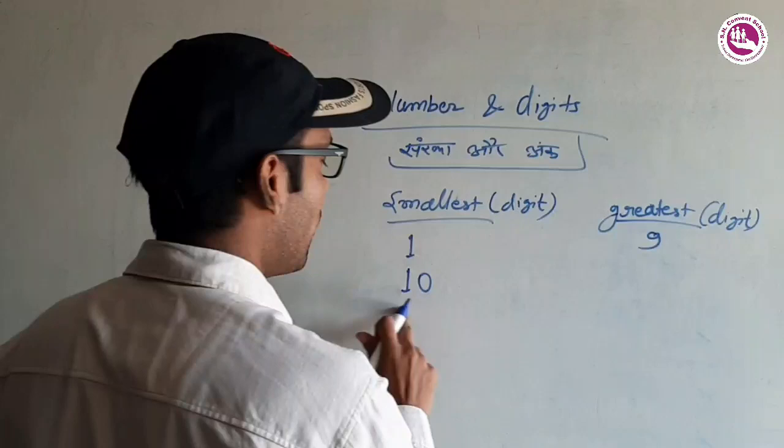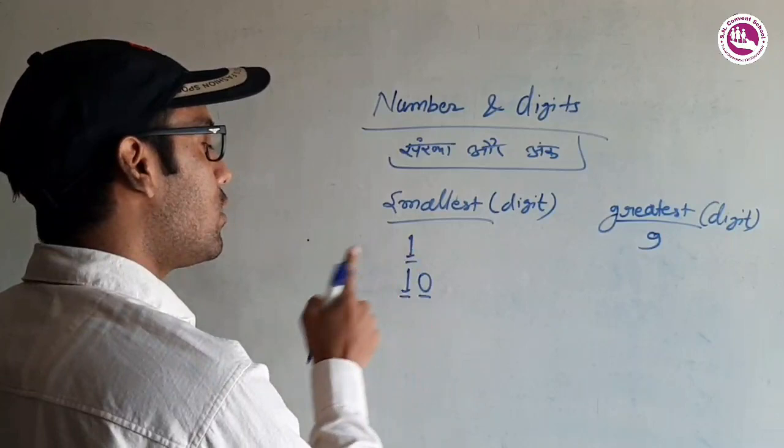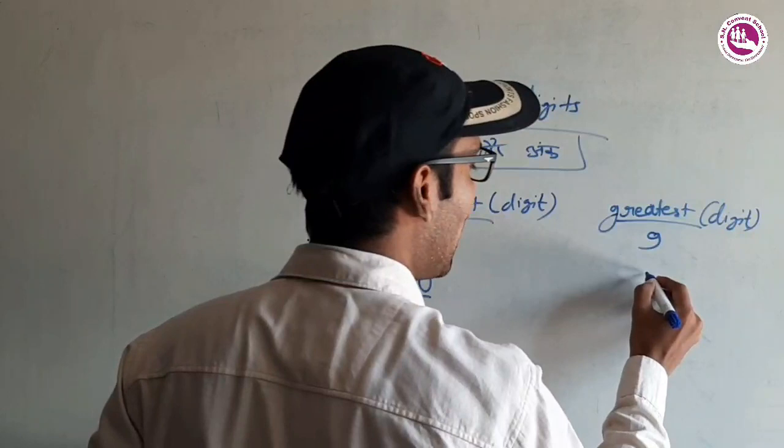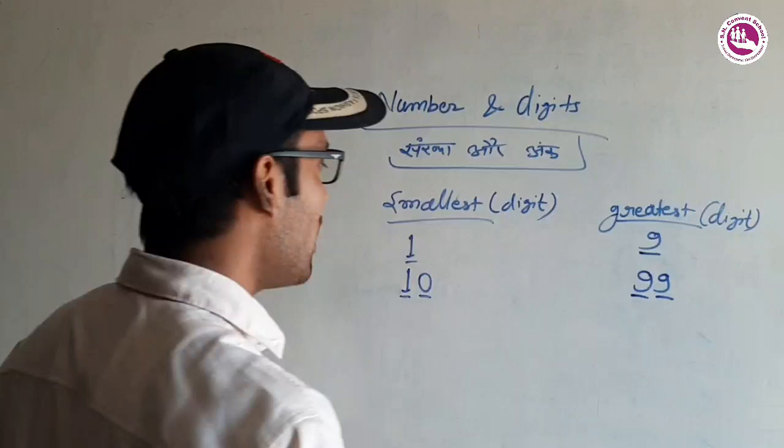After one-digit, we have ten — which is a two-digit number. One has one digit, and ten has two digits. So, two-digit ka smallest number kya hota hai? Ten. Isse chhota number nahi hota — agar chhota bolenge to nine, aur nine one-digit ka hota hai. Isliye smallest two-digit number is ten, aur greatest two-digit number kya hota hai? Ninety-nine.